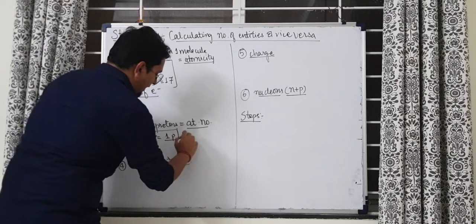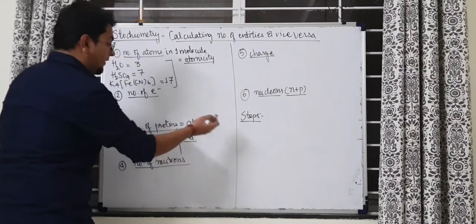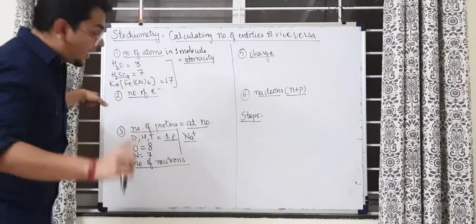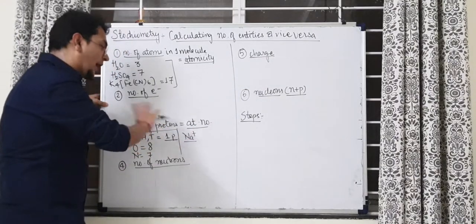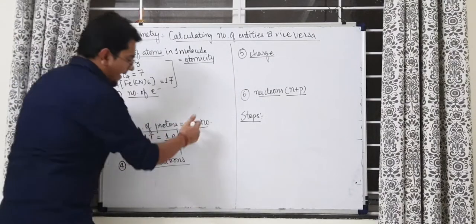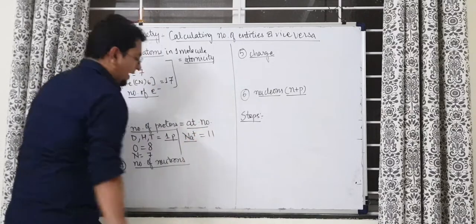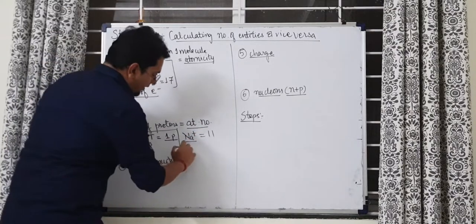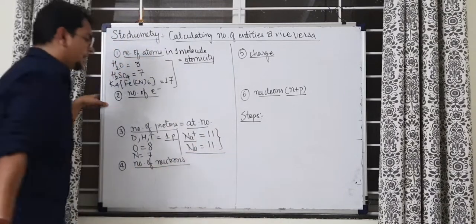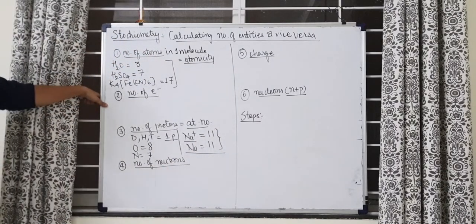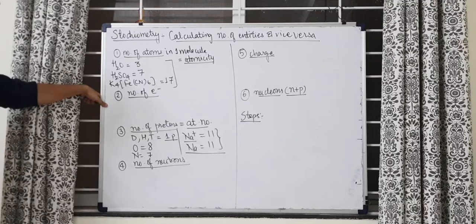Another example here. If I write Na plus, will he have one extra proton? No. Na plus has one less electron. Number of protons for ion also is the atomic number only. And atomic number of sodium is 11. That means for sodium, as well as Na plus, the number of protons are same. That is 11 only. It does not matter you have cation or anion. Number of protons, number of neutrons does not change.